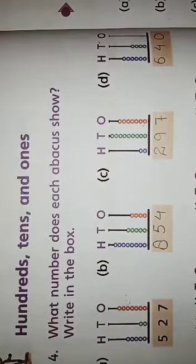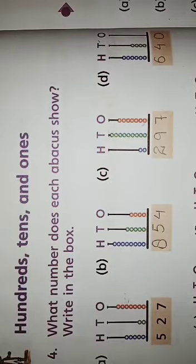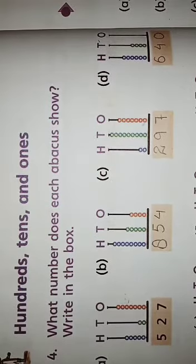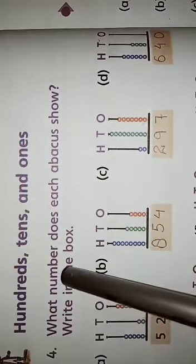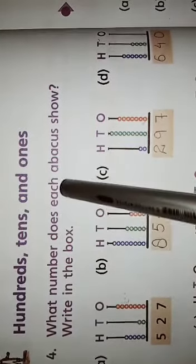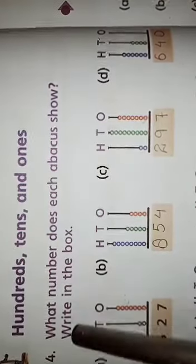Assalamu alaikum students. This video lecture is for class 2, subject is Countdown. Today we will start page number 24, Hundreds, Tens and Ones. Question number 4 is: what number does each abacus show? Write in the box.